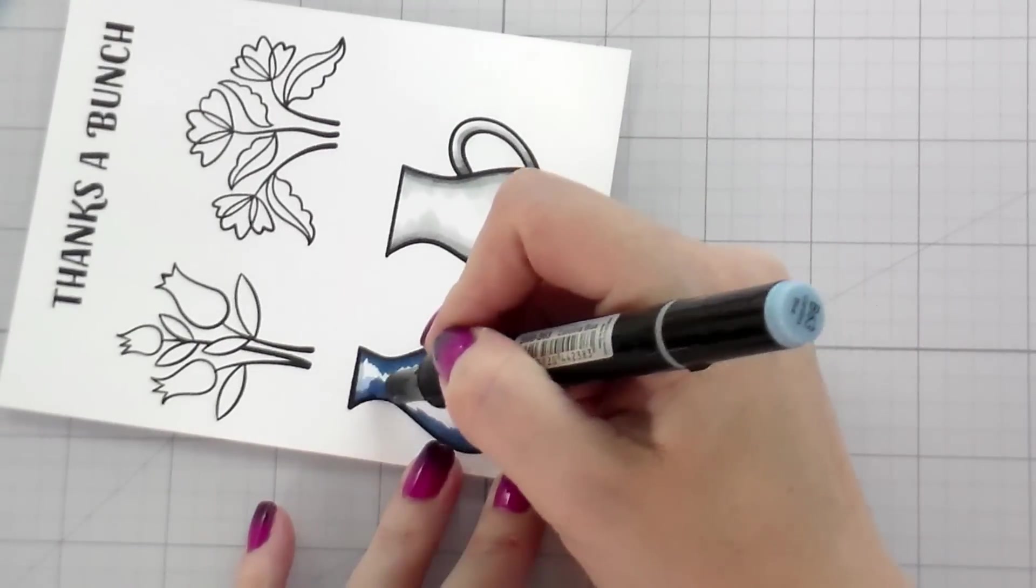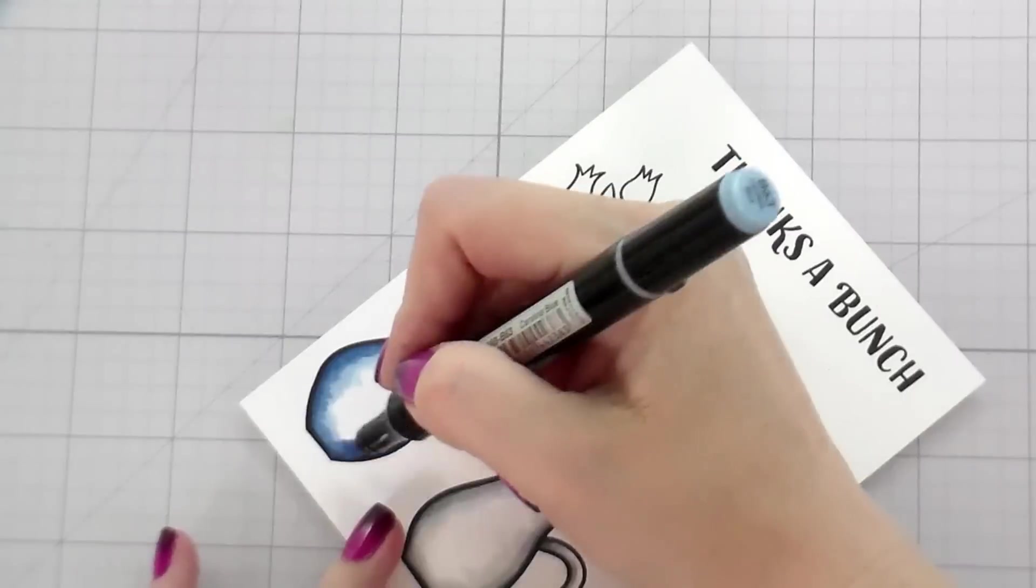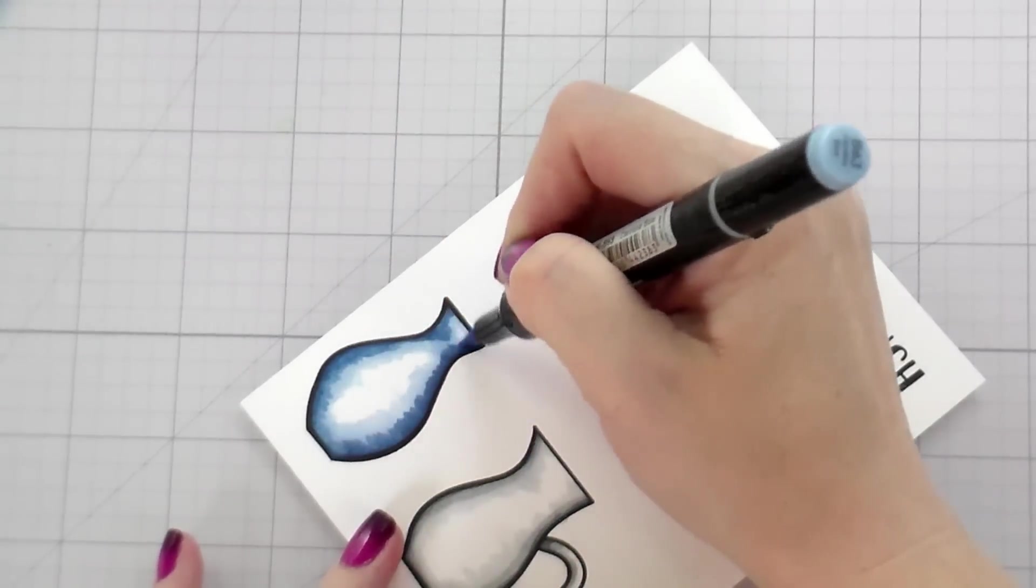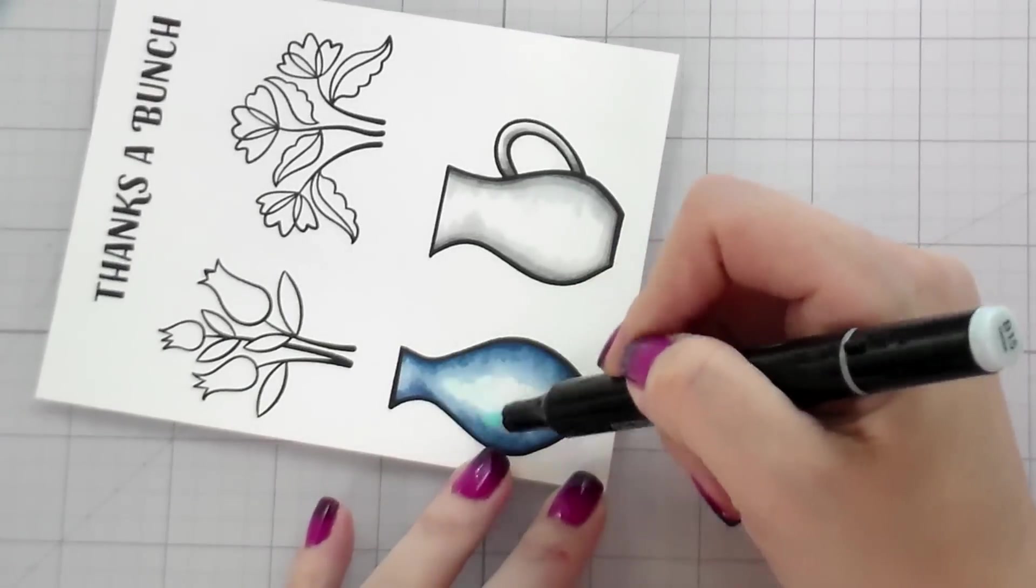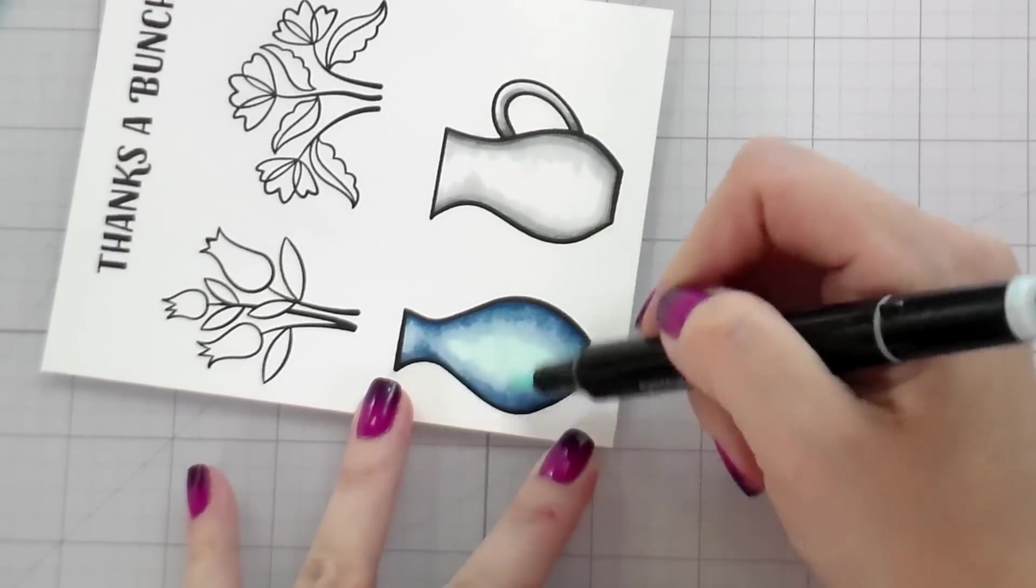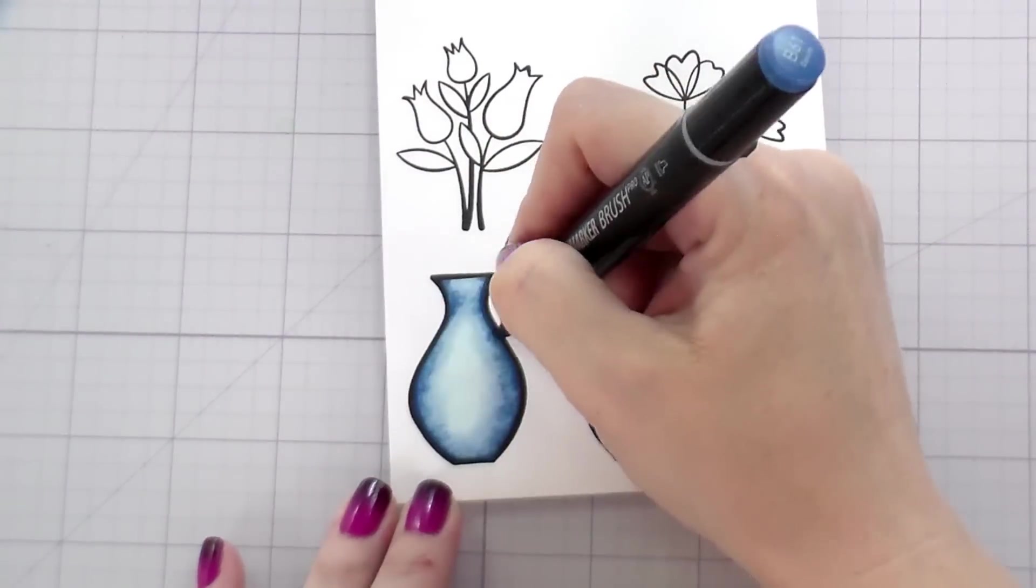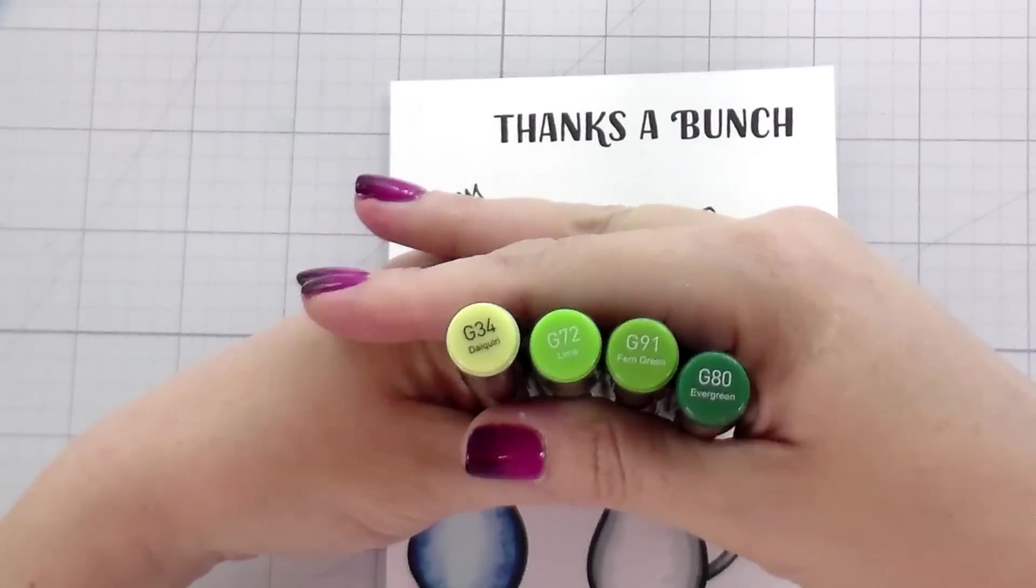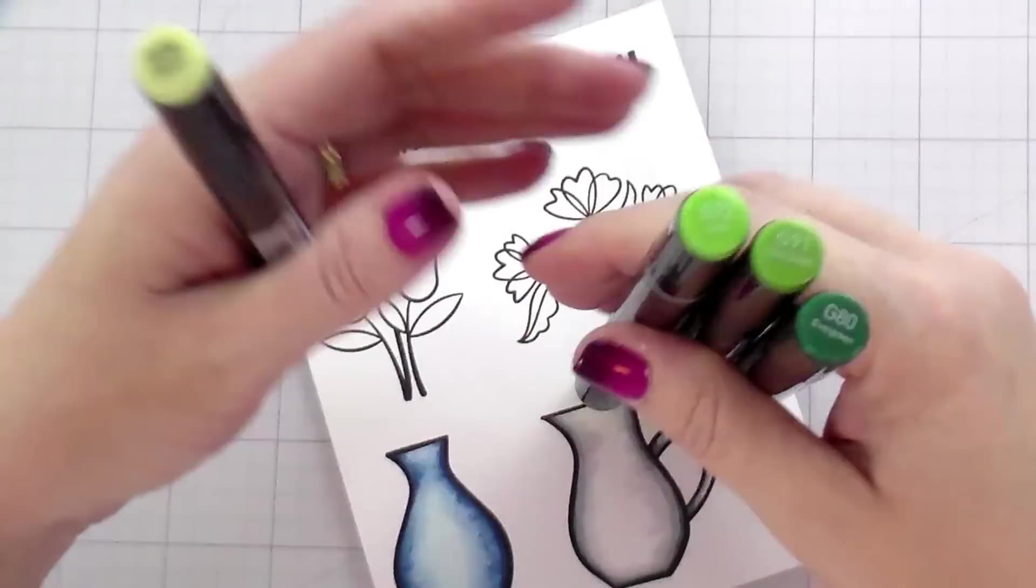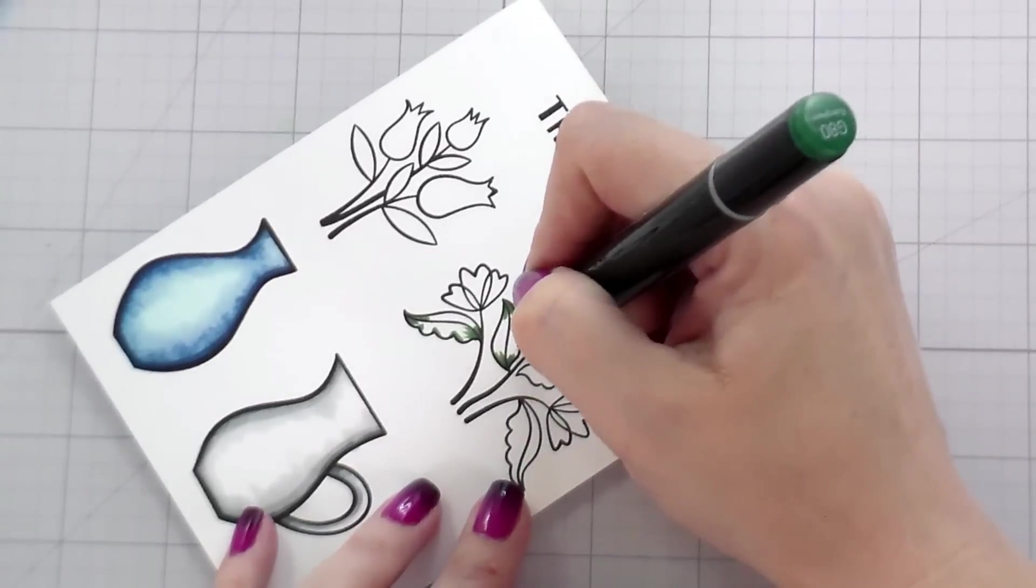So here I am doing a little bit of alcohol marker coloring. I've stamped in Hero Arts Intense Black Ink. It is safe for alcohol markers. I am speeding through this. I wanted you to see, because this was part of the process, but really, I know it's going to be shocking. Coloring is not the focus of my video this time around.